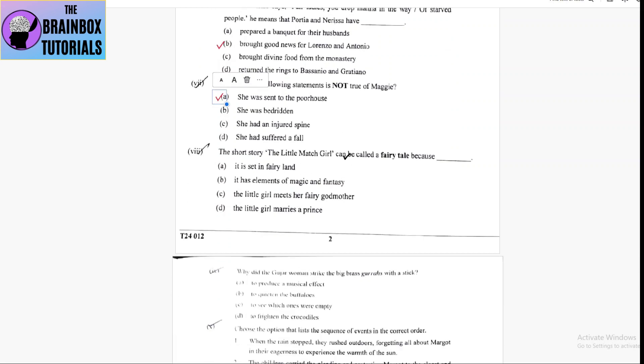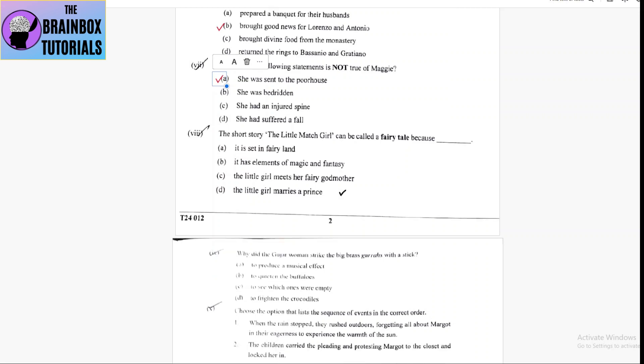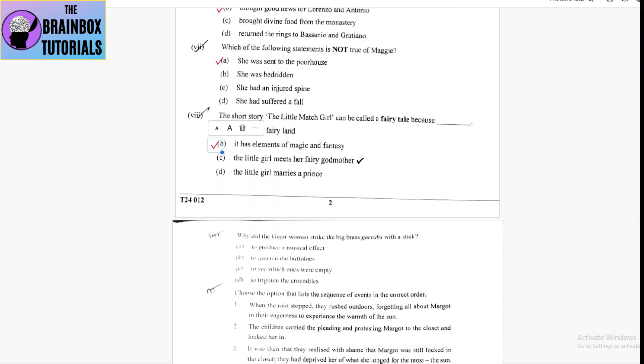the short story, the little match girl can be called a fairy tale because option number A, it is set in fairy land. Option number B, it has elements of magic and fantasy. Yes, it has elements of magic and fantasy as she visualizes all the four things that the goose is jumping and the iron stove is there and all.